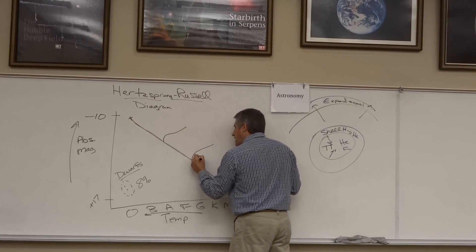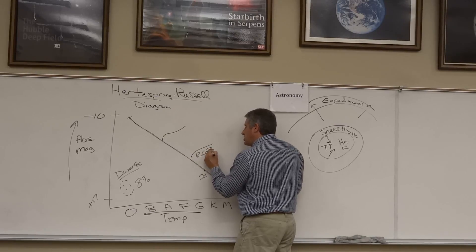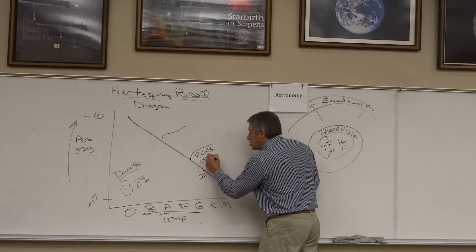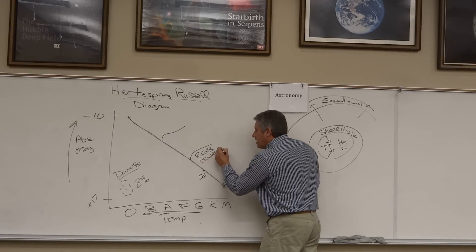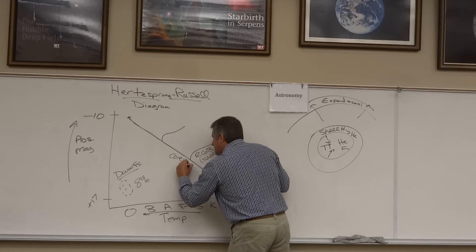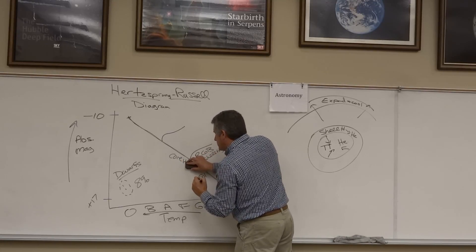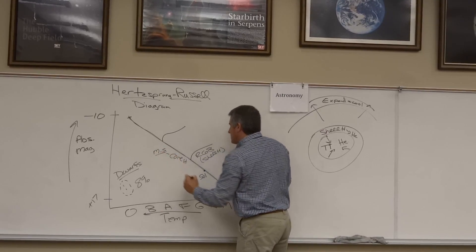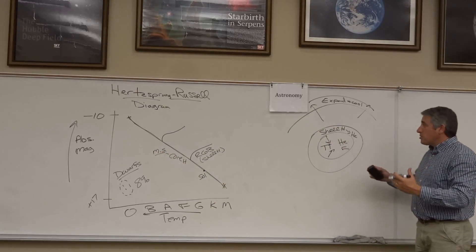We call this the red giant branch, the RGB. What's going on here is that the star is burning shell hydrogen rather than the core hydrogen that it burns on the main sequence. The core hydrogen is what's going on in the main sequence and that's where the star spends most of its life. But at this point we're starting to burn shell hydrogen.